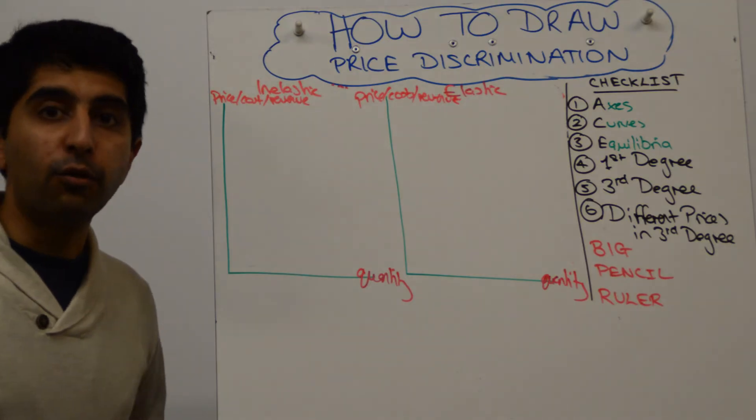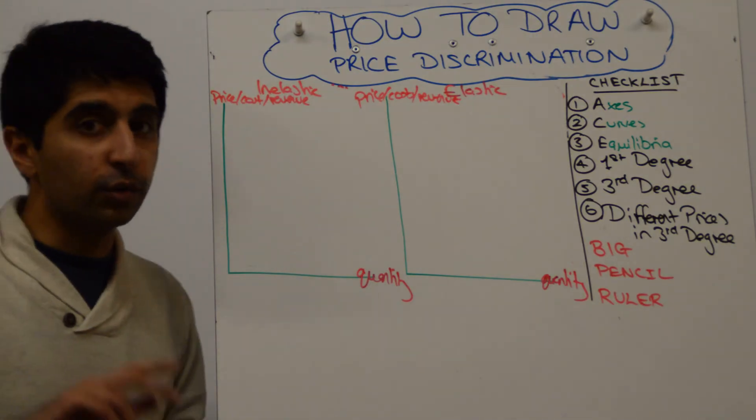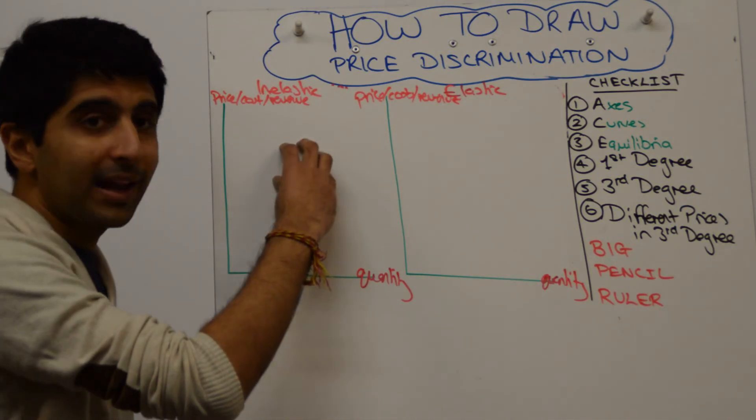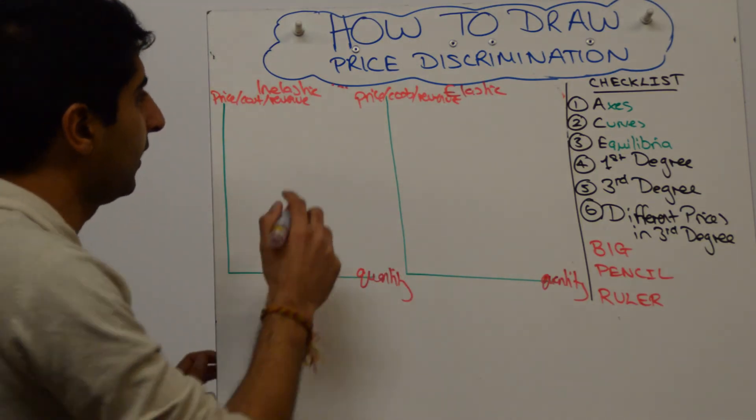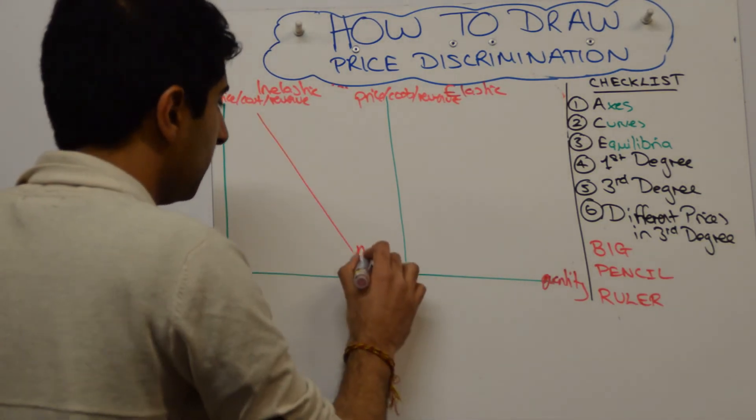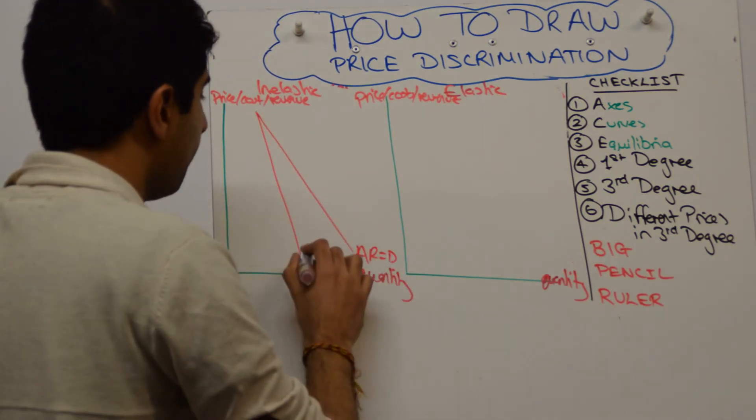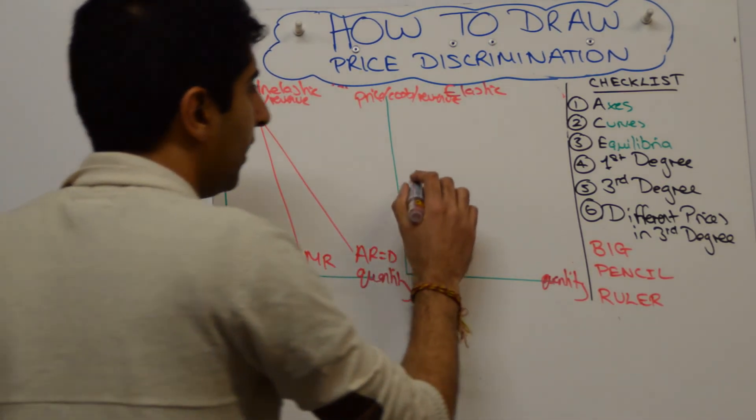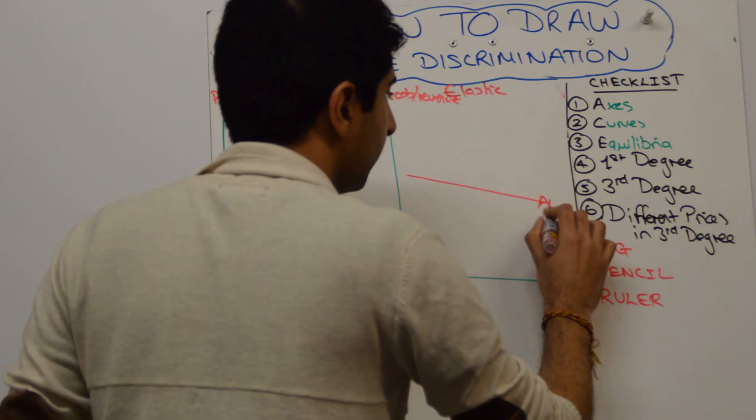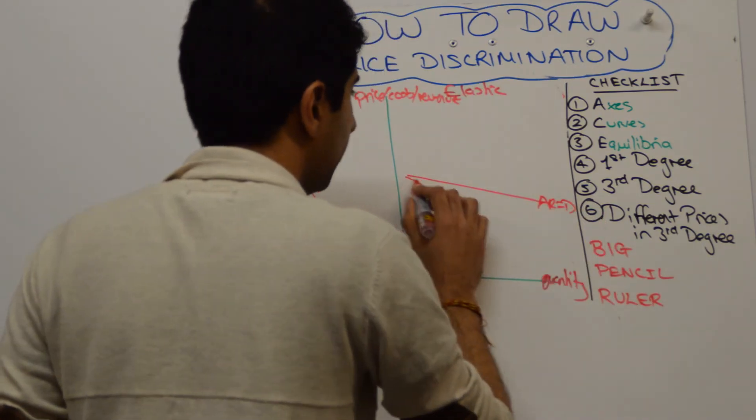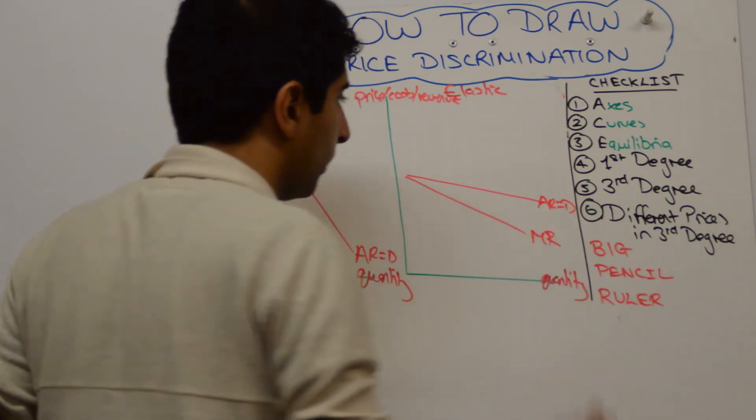Okay, next thing to do is to draw your revenue curves. Now, they are your demand curves, right? So you've got to draw them inelastic here and elastic here. So let's do that. AR, which equals demand. MR, twice as steep, and then more elastic. So AR equals demand. MR, twice as steep.